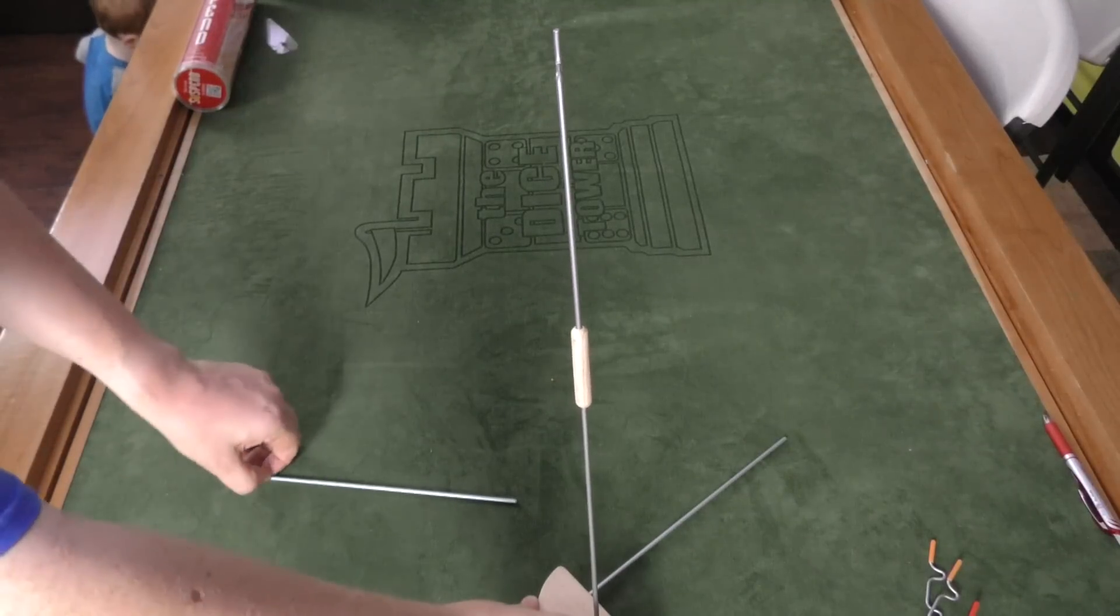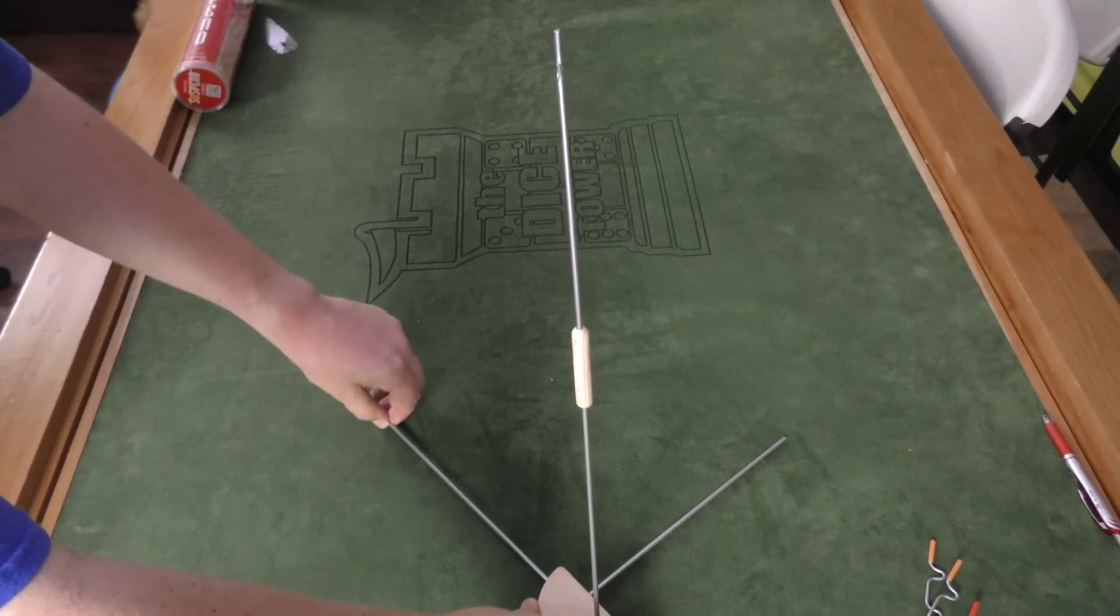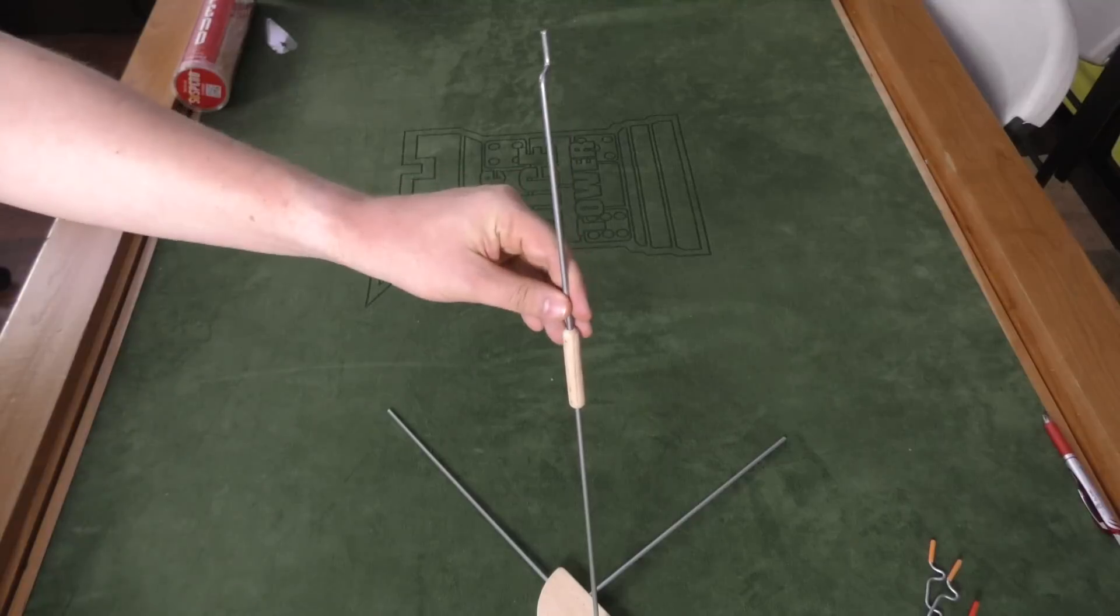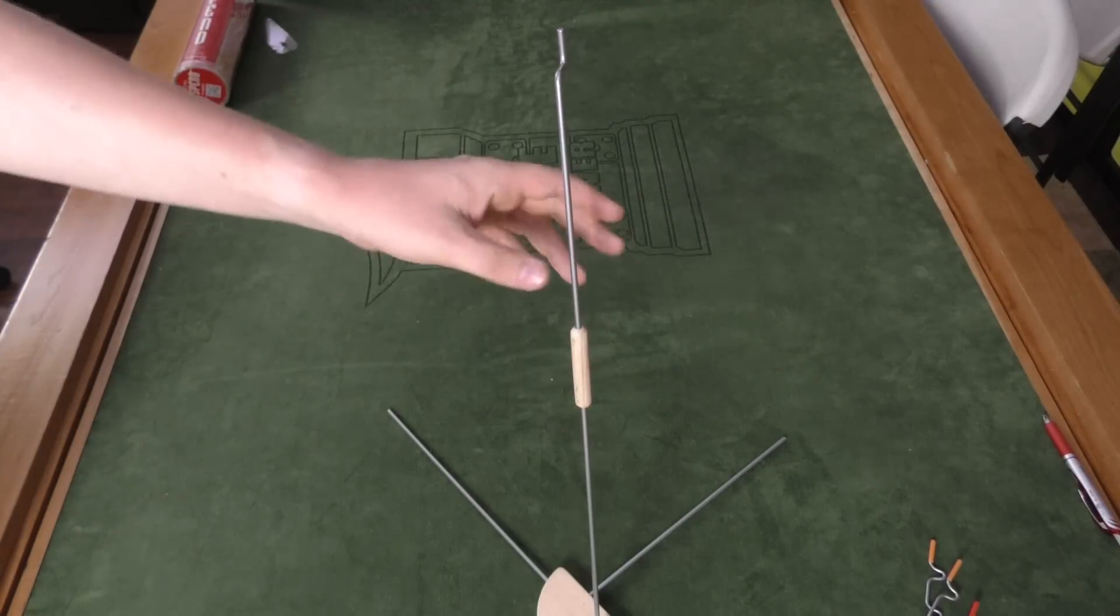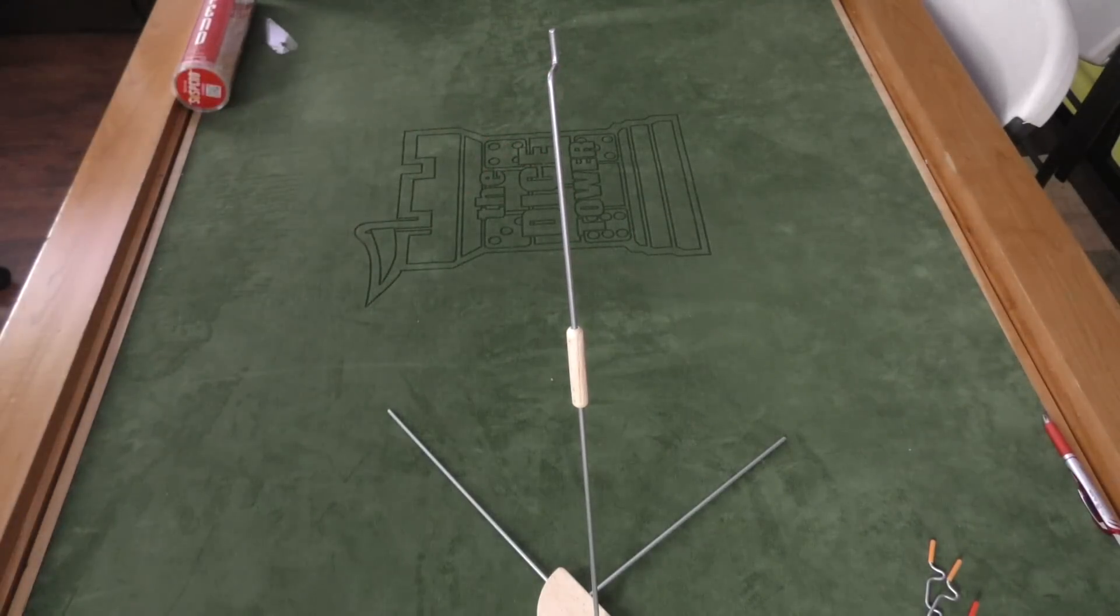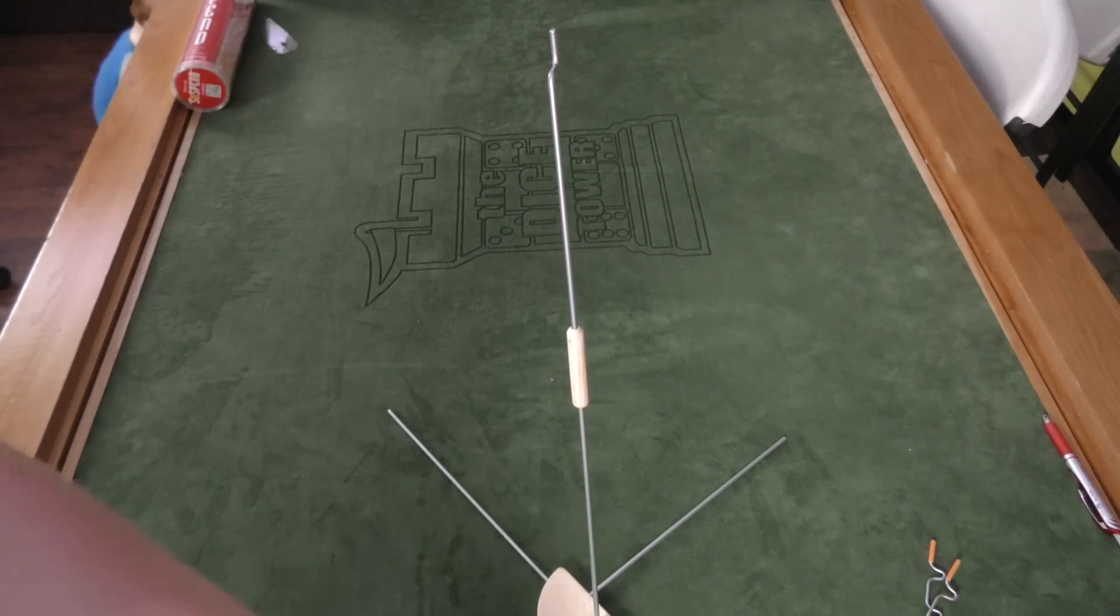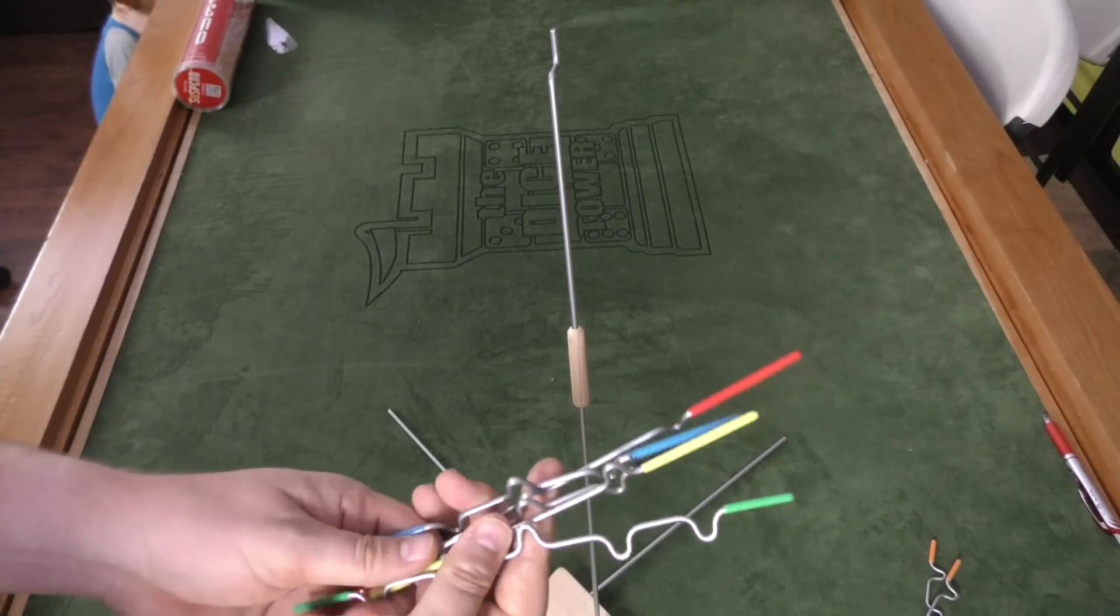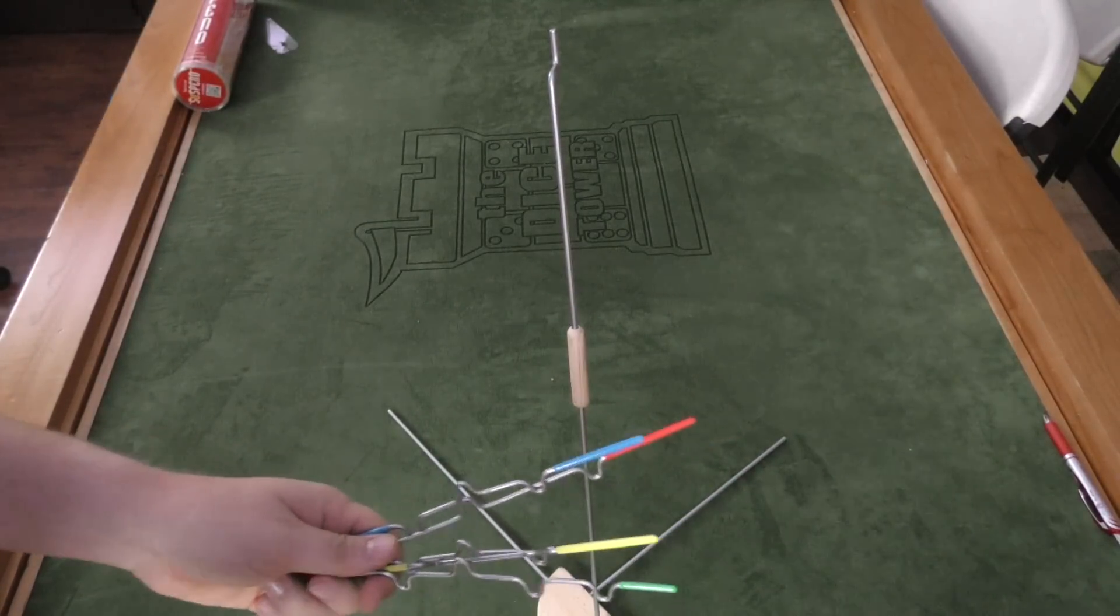So in the middle of the table, you have this contraption here. It's made up of two steel rods that are inserted into a base. Another two steel rods that are connected by this wooden dowel here are placed. You'll see this one has a notch at the top. Each player is going to get different rods of different colors. There's six different colors: red, yellow, green, blue, black, and orange.